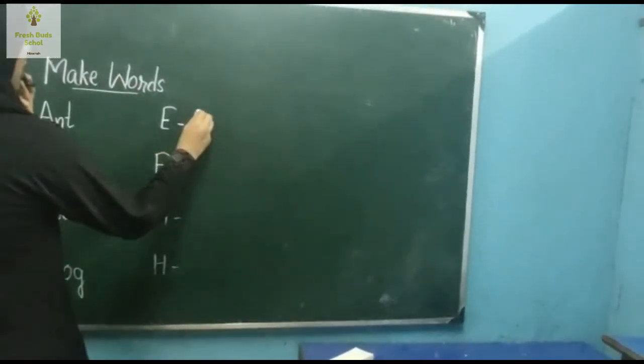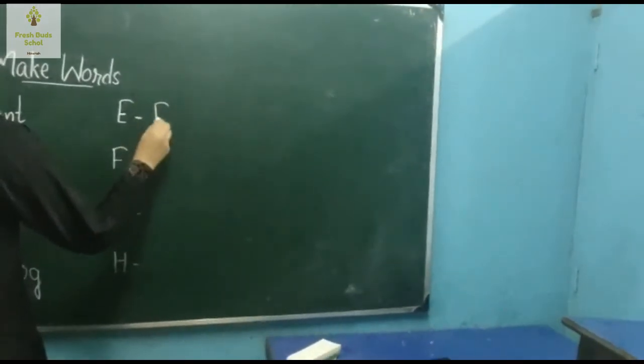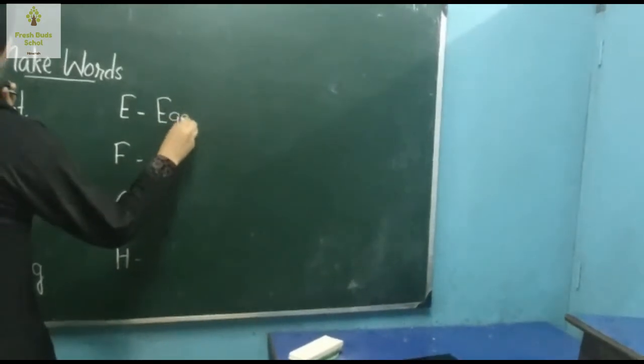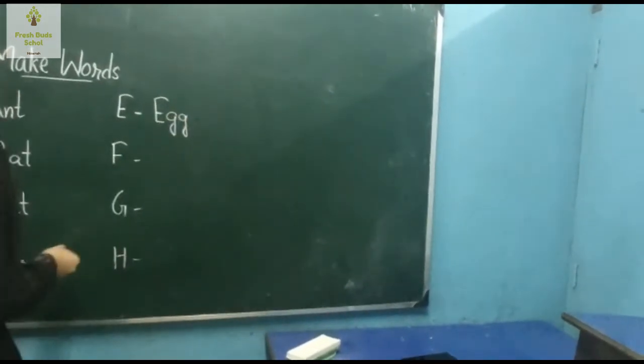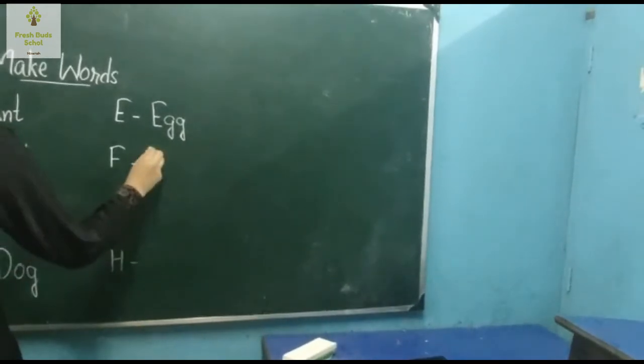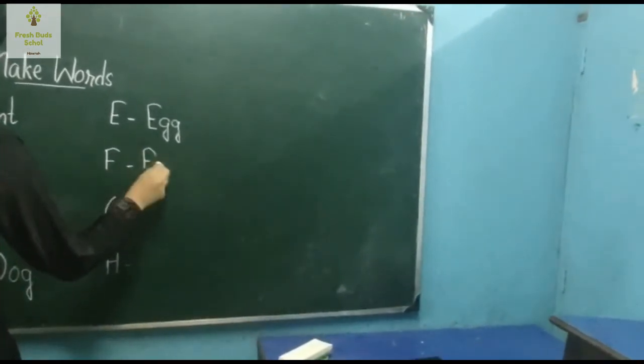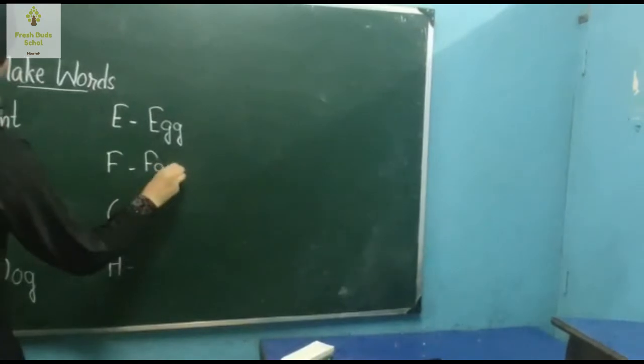Now E for egg, E, double G, egg. F for fan, F, A, N, fan.